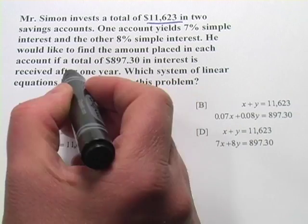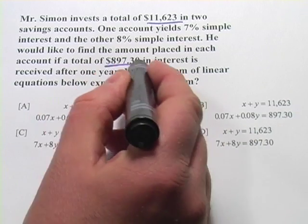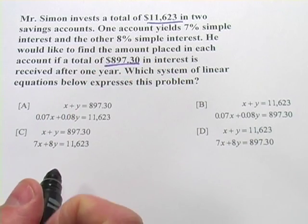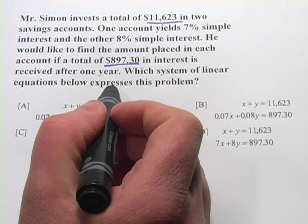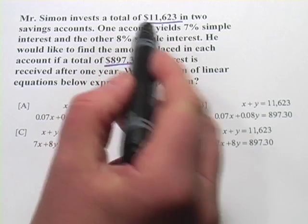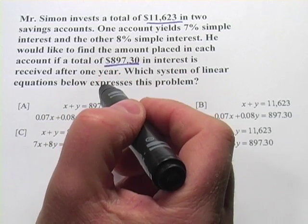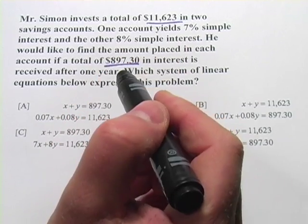And he'd like to find the amount placed in each account if a total of $897.30 is the interest received after one year. So his bank is paying him that every year. He knows he put in $11,623 to begin with, but he's not sure how much he split into each account.